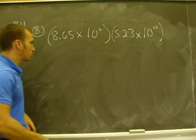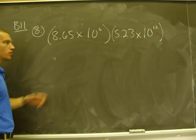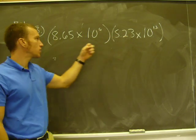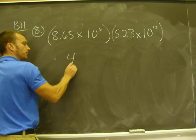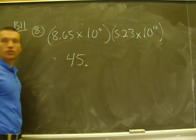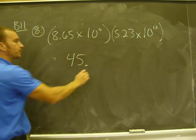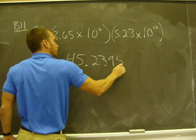And then we'll go from there. So the product of these two numbers in scientific notation, 8.65 times 5.23 is 45.2395.